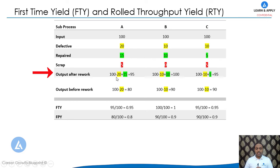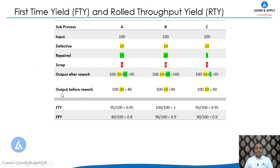Doing this calculation: for Process A it comes to 95, for Process B it is 100, and for Process C it is 95. The sixth row shows output before rework — here we do not consider whether a defective product was made okay after rework. So the calculation is 100 minus 20, giving 80 for Process A.